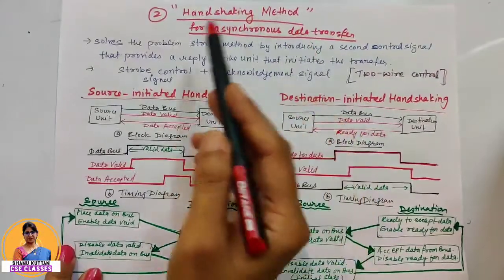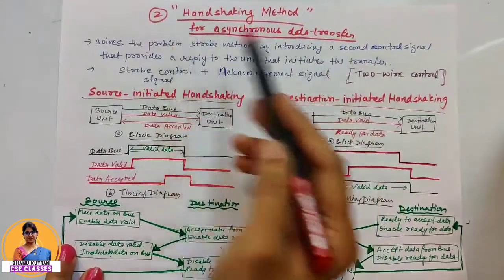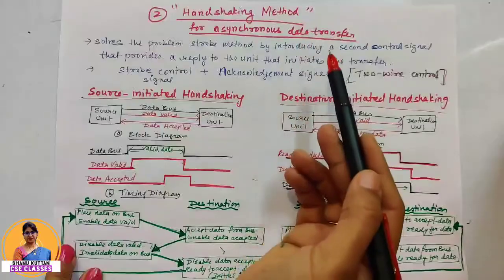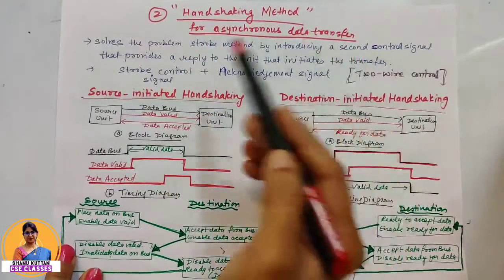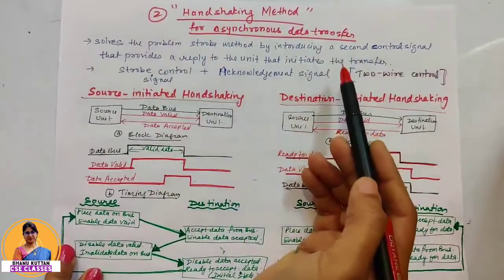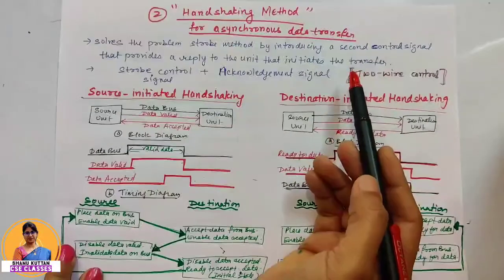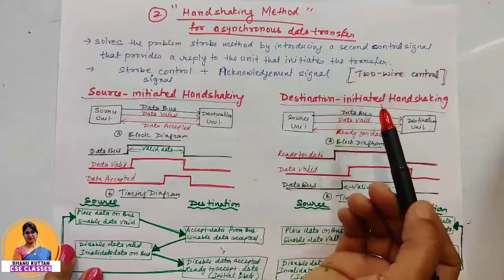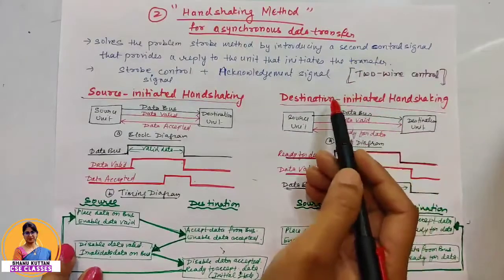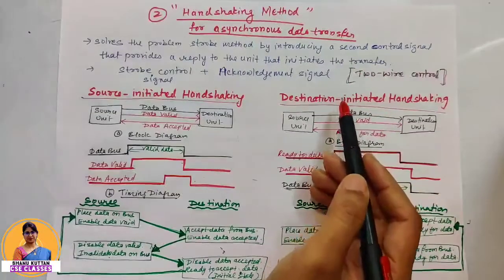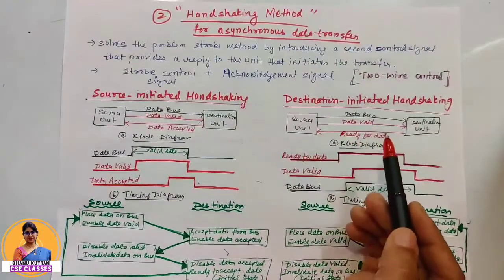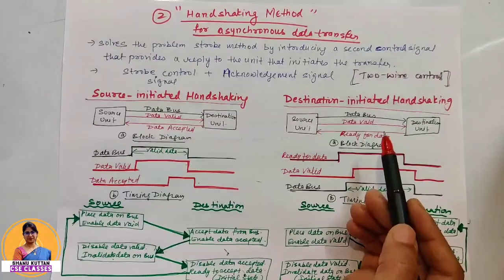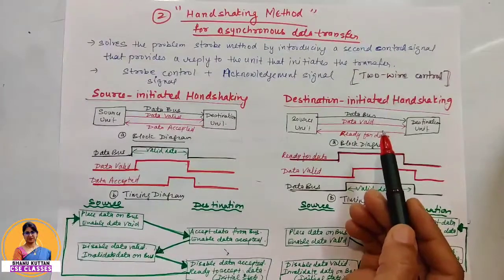Asynchronous means the two communicating devices do not have common clocks. They have private clocks and have to synchronize the data transfer. We have seen the first strobe control in the previous video, and now we have the handshaking method.